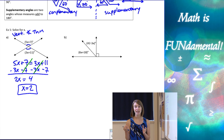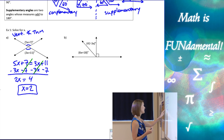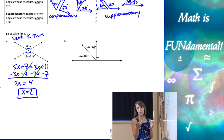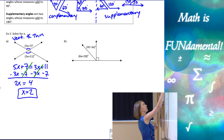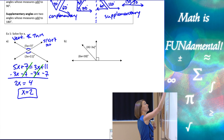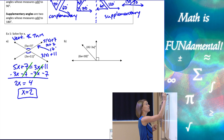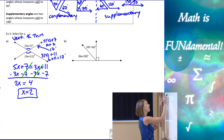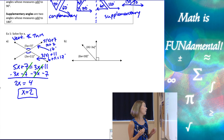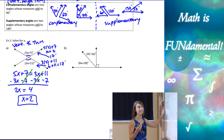If we want to check our answer, we can plug that back in. So 5 times 2 plus 7 is 10 plus 7, which is 17 degrees. Then 3 times 2 plus 11 is 6 plus 11, which is also 17 degrees. Since they're both 17 degrees, they're both equal, so X equals 2 is correct.